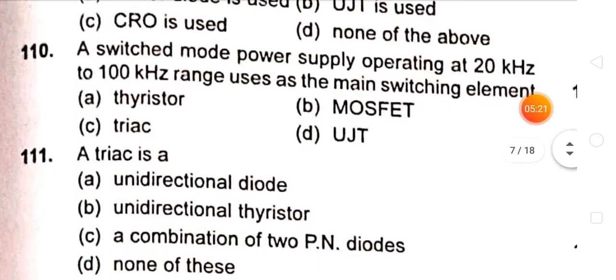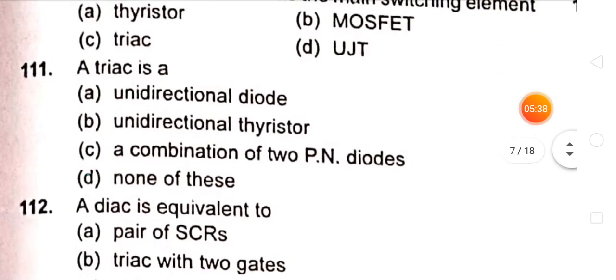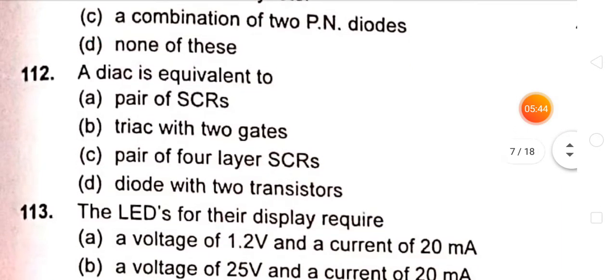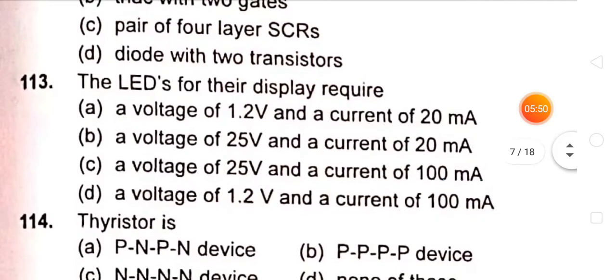A switch mode power supply operating at 20 kHz to 100 kHz range has MOSFET as the main switch element. A TRIAC is a unidirectional thyristor. A DIAC is equivalent to a pair of four layer SCRs. The LEDs for the display require a voltage of 1.2 volts and a current of 20 milliamperes.